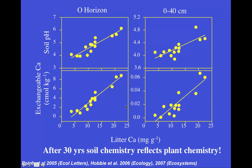It's important to note that these plants were all planted on the same starting soils. So these are all changes that have occurred in just 30 years of interactions between the plants and those soils — 30 years of inputs from those plants altering the chemistry of those soils.